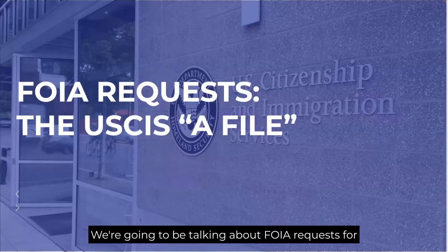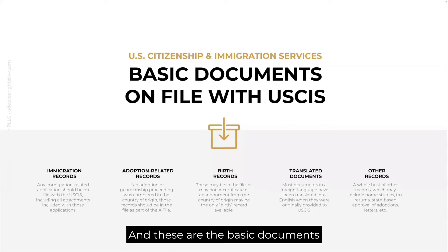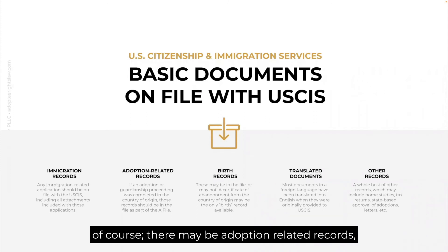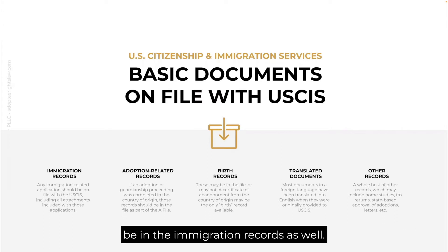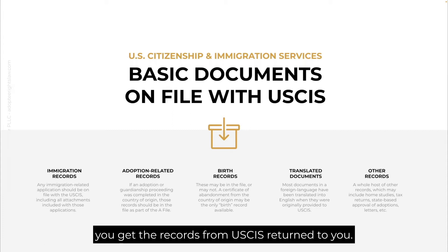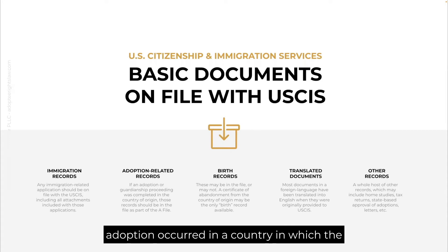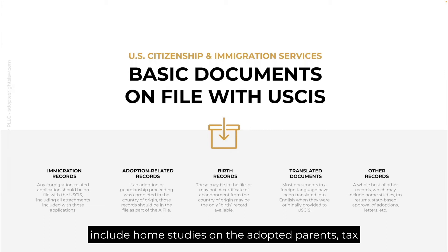We're going to be talking about a FOIA request for the USCIS A-file, or the Alien Registration File. The basic documents on file with USCIS include immigration records and may include adoption-related records — so if there's an adoption or guardianship proceeding in the country of origin, those should be in the immigration records as well. Sometimes there are birth records; sometimes it's not a birth record but a certificate of abandonment, and sometimes birth records are removed or redacted. There are also translated documents and a host of other records, which could include home studies on the adoptive parents, tax returns, and state-based approval of adoptions.